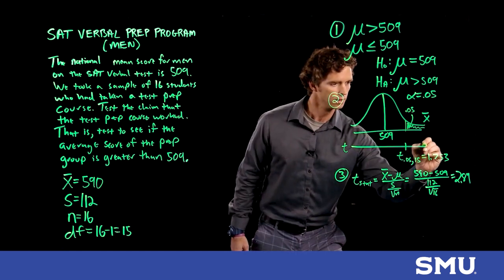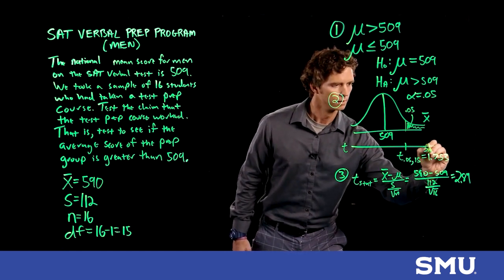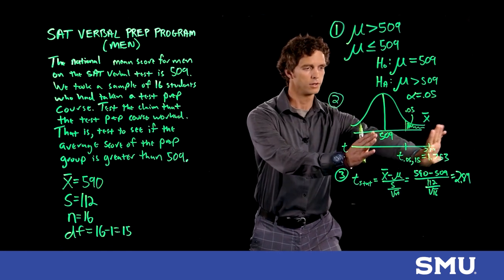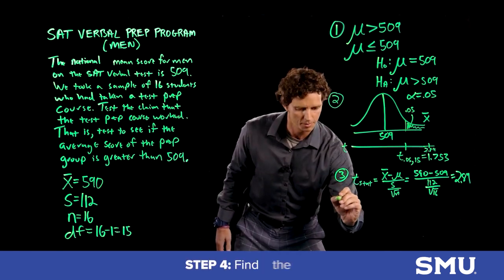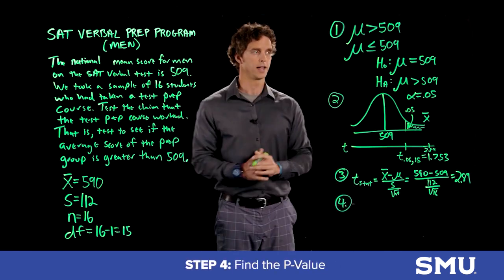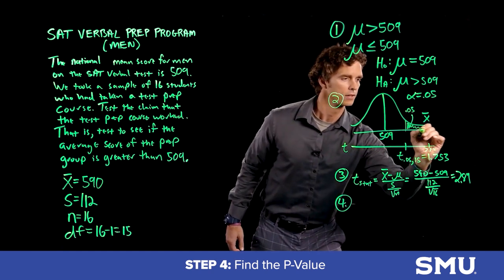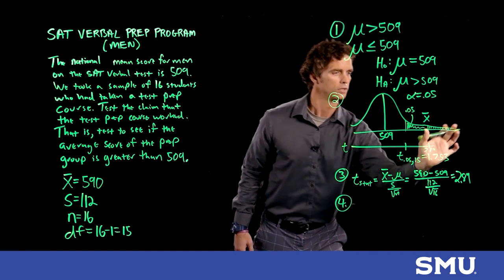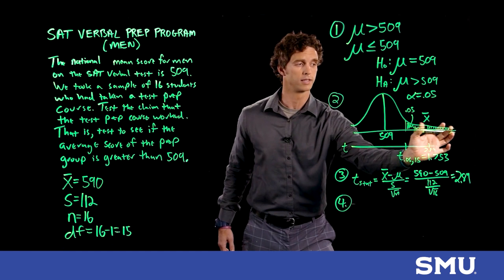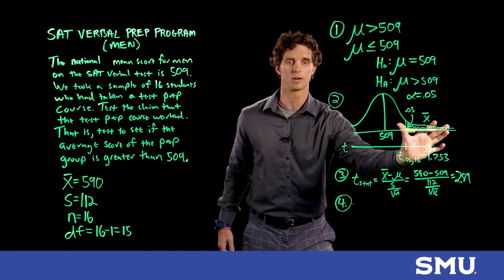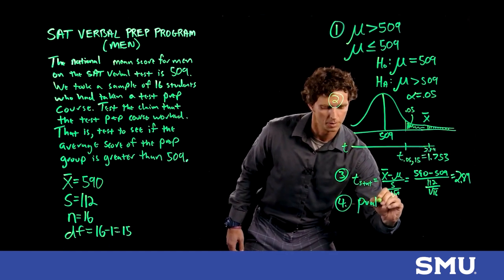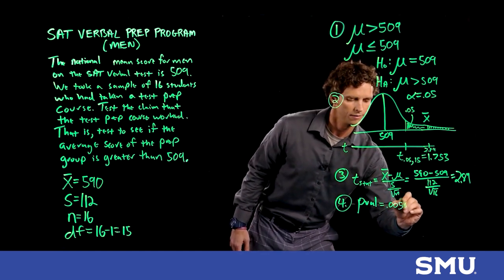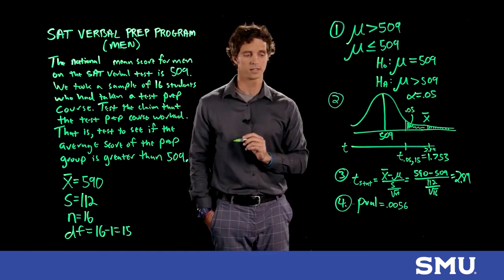Clearly, 2.89 is out in the rejection region — well beyond the critical value of 1.753. We already know the decision, but let's find the p-value. The p-value is the area from 2.89 onward, which is a subset of alpha. You can see it's smaller than 0.05. Using software, the p-value equals 0.0056, which is less than alpha = 0.05.